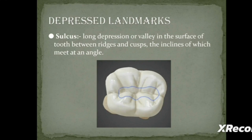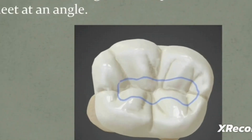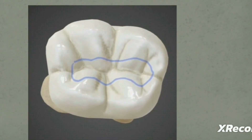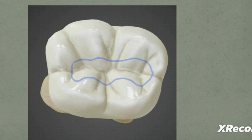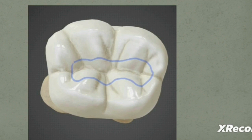Next is sulcus. A sulcus is a long depression or valley-like structure on the surface of the tooth between ridges and cusps, the inclines of which meet at an angle. You can imagine it like hills with slopes — the developmental groove and cusp inclines meet at an angle and make a sulcus. Sulcus is that valley-like structure.